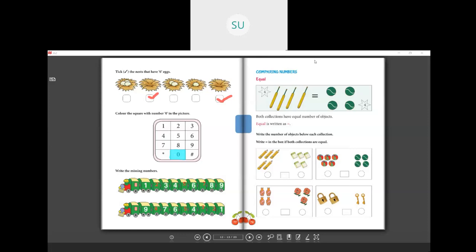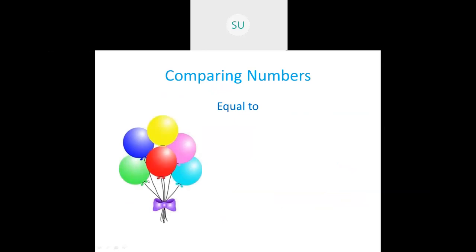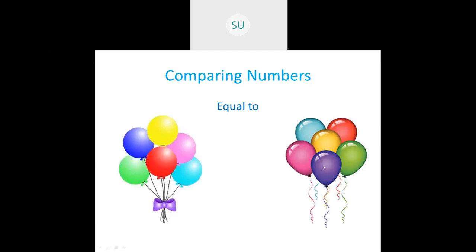Now let's see the meaning of comparing numbers. First, equal to. Here I have a set of pictures. In the first picture there are 6 balloons — 1, 2, 3, 4, 5, 6. In the second set there are also 6 balloons. Both sets have 6, so they are equal in number — they have the same quantity. The sign with two lines is called the equal to sign. Whenever you have an equal number, you put this equal to sign.